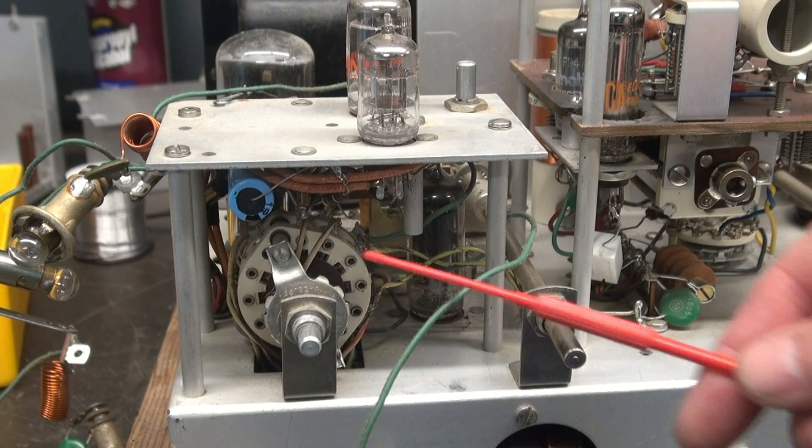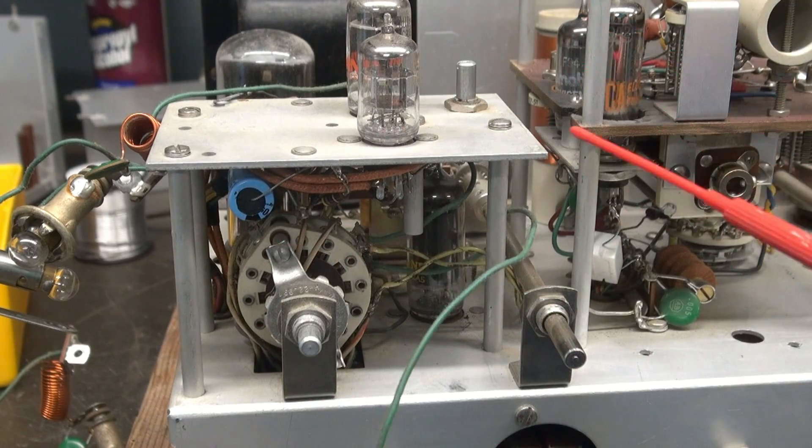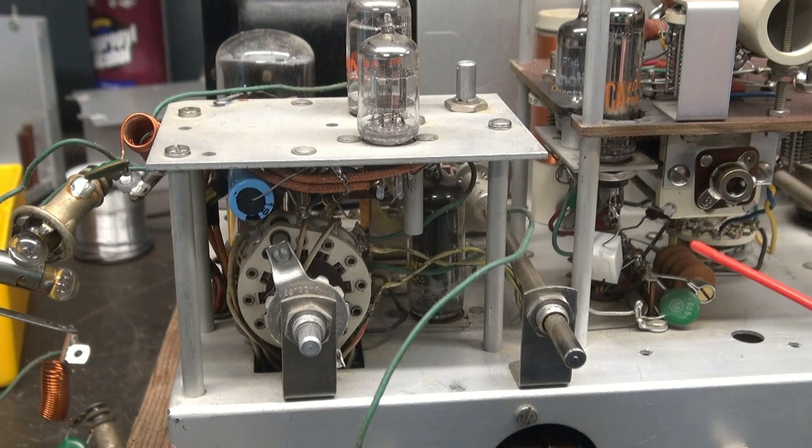This keyer platform is reinstalled. You can see the new cap right there. So the next step, I'm going to flip this guy up on its side and we're going to change out all the electrolytics that we can find underneath.